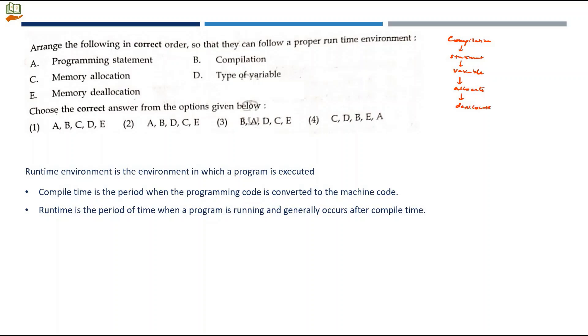This is the overall flow for a programming language which uses compilation process and then the program runs. There is another interpretation where they say there is a programming statement. With the statement, we compile it. When we compile, we pick the variable, take the type, go for memory allocation, and then after the program is over, memory deallocation.